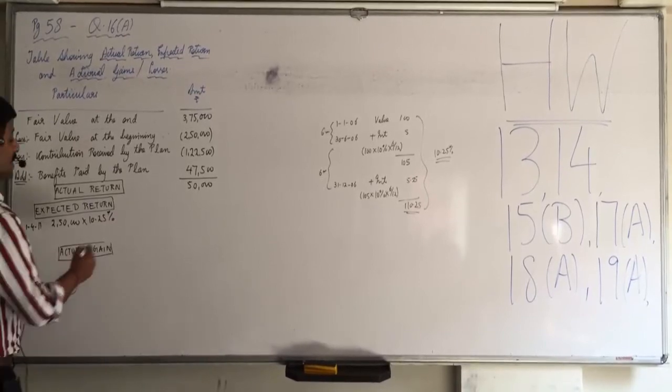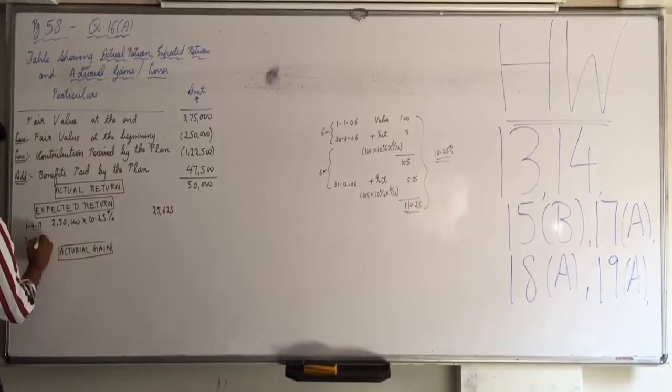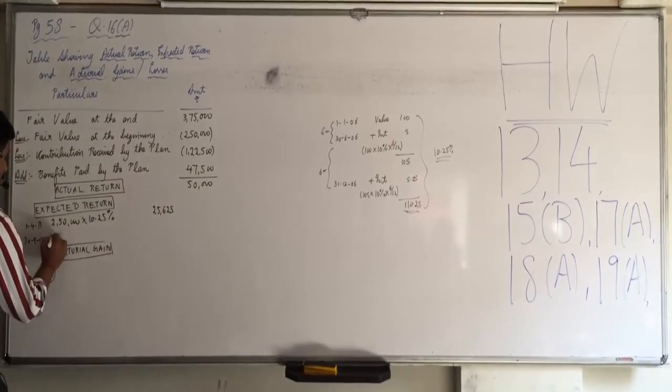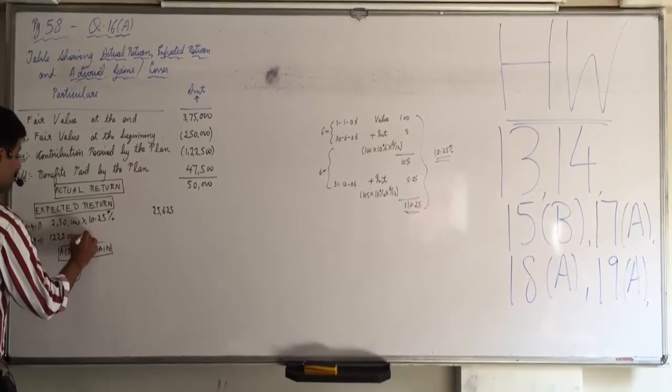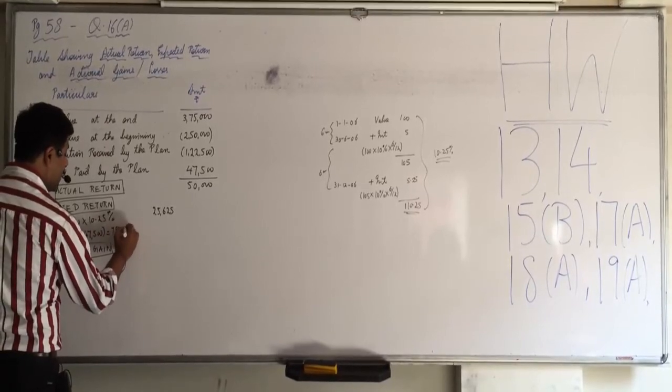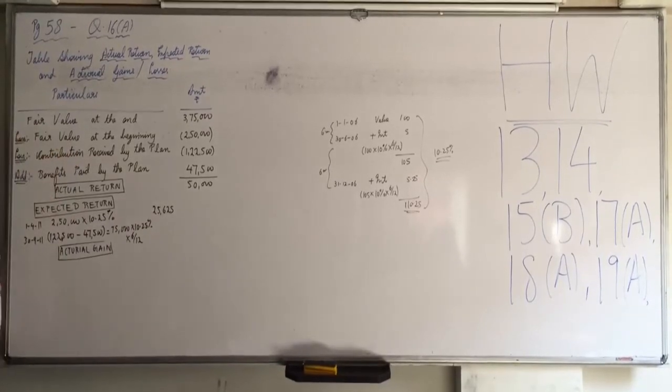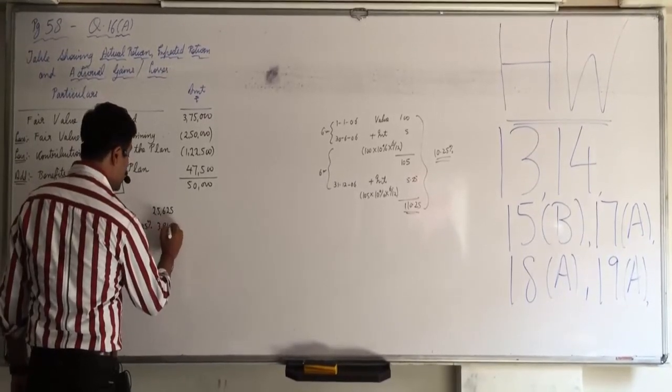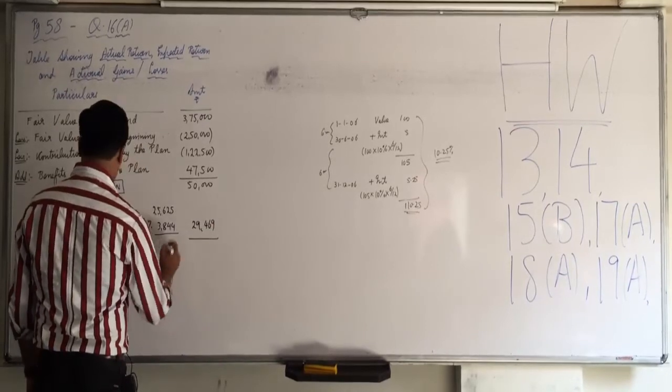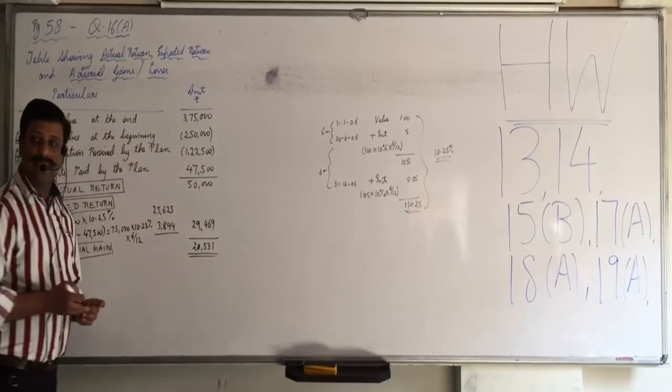Now on $250,000 we will count 10.25% for whole year, so $25,625. And on 30th September what we are investing is $122,500 minus $47,500. Our net investment is $75,000 into 10.25% for 6 months equals $3,844. Total expected return is $29,469. So gain of $20,531.